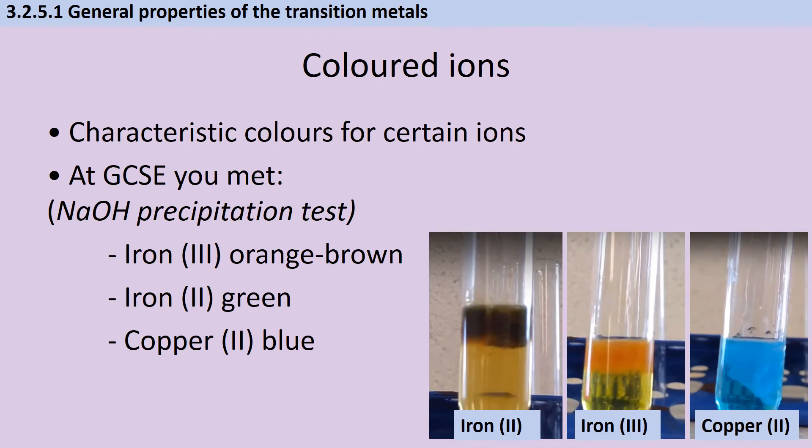At A-level, we're going to meet some more colors, some more examples of that. For instance, vanadium really commonly has oxidation states of +5, +4, +3 and +2, and those will turn yellow and then blue and then green and then violet. We also talk a little bit more detail about why it is the transition metals produce these colored compounds.